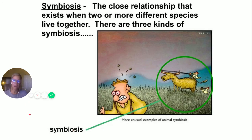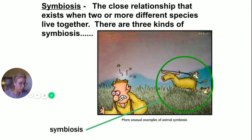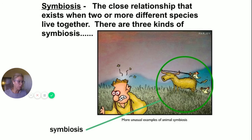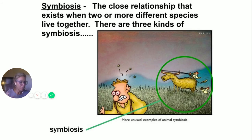We have two topics left in this chapter. Symbiosis: the close relationship that exists when two or more different species live together. There are multiple types — I'll teach you three. Close relationship between members of two different species. For the ones I teach you, it's always going to be good for at least one: parasitism, commensalism, and mutualism.